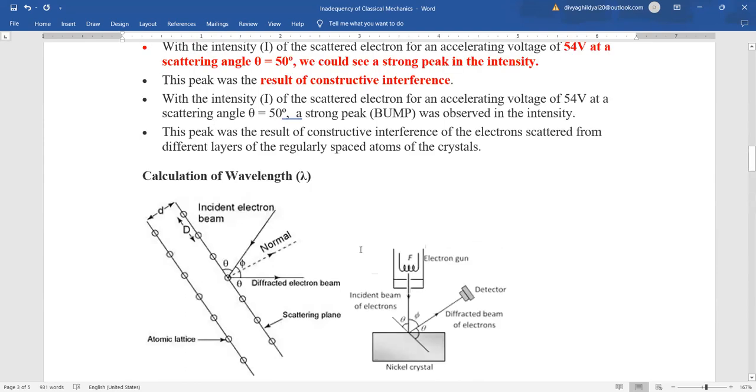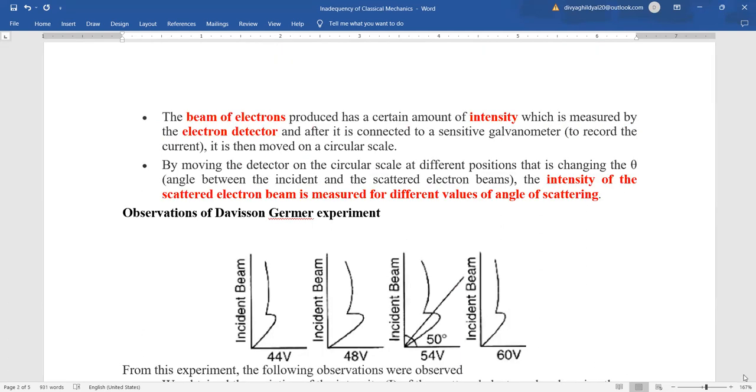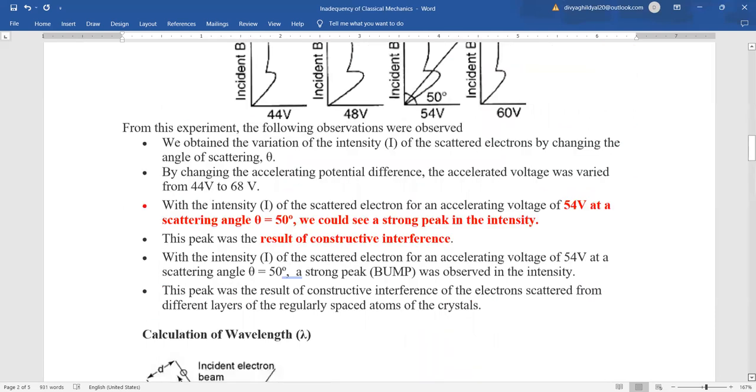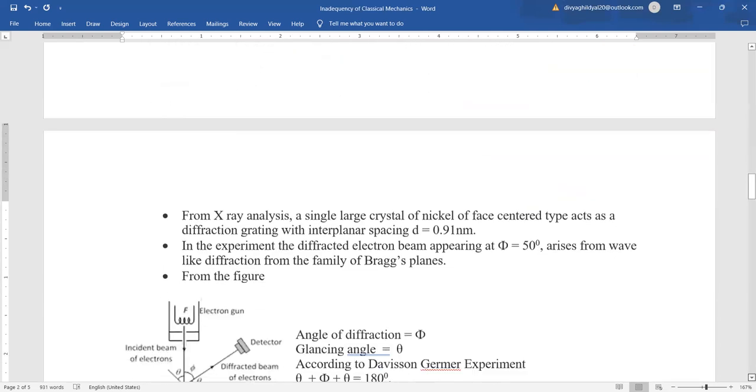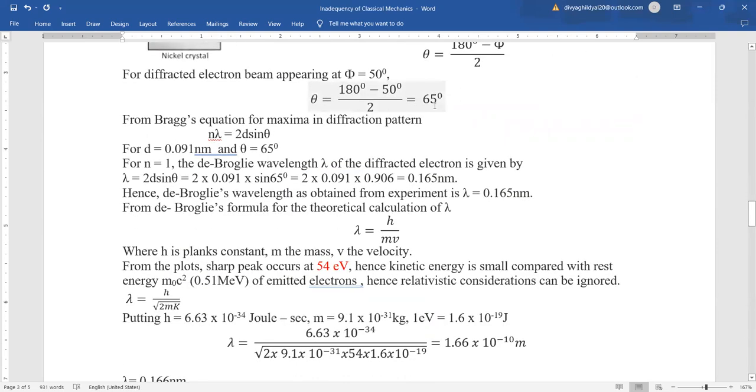Where do we get phi equals 50 degrees from? From the plots showing 50 degrees at 54 volts. Putting theta equals 65 degrees in Bragg's equation for maxima in diffraction pattern, 2d sin theta equals n lambda, and for simplification taking n equals 1.